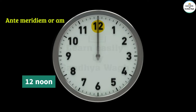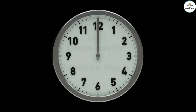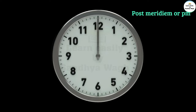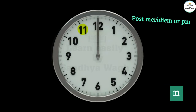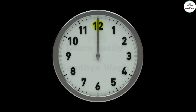After 12 noon, the time is stated as post-meridiem — PM. So after noon: 1 PM, 2 PM, 3 PM, 4 PM, 5 PM, 6 PM, 7 PM, 8 PM, 9 PM, 10 PM, 11 PM. And at night, 12 o'clock is called 12 midnight. This method of measuring time is called the 12-hour clock. Now let us learn about the 24-hour clock.